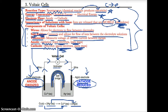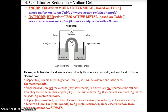Electrons flow from the Cu electrode, the anode where oxidation occurs, to the Ag cathode where reduction is occurring. This electrode loses electrons, and the electrons go to where they are gained at the cathode.